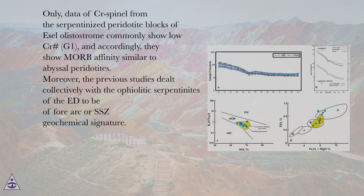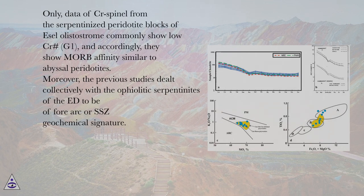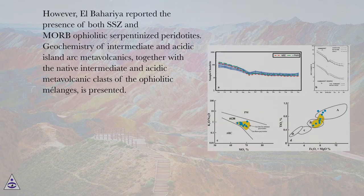Only CR spinel data from the serpentinized peridotite blocks of the azole olistostrome commonly show low CR# (G1), and accordingly show MORB affinity similar to abyssal peridotites. Moreover, previous studies collectively described the ophiolitic serpentinites of the Eastern Desert as having a forearc or SSZ geochemical signature. However, L-Baraya reported the presence of both SSZ and MORB-type ophiolitic serpentinized peridotites.